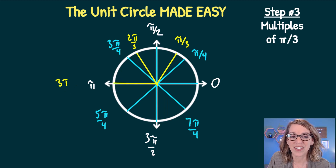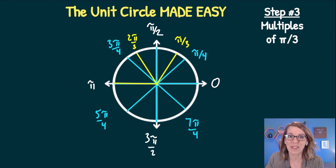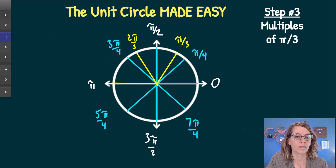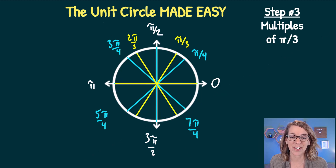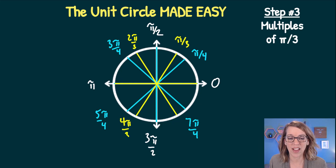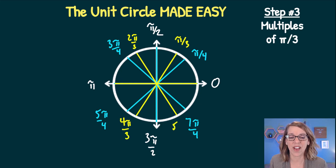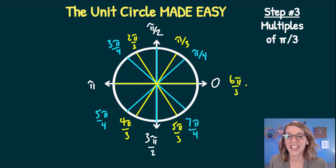Placing the rest of the 60-degree or pi-thirds increments and labeling them: at pi we were at 3 pi-thirds, so the next increment is 4 pi-thirds. Traveling another pi-thirds gives 5 pi-thirds, and that last 60 degrees gets me to 6 pi-thirds, which reduces to 2 pi.